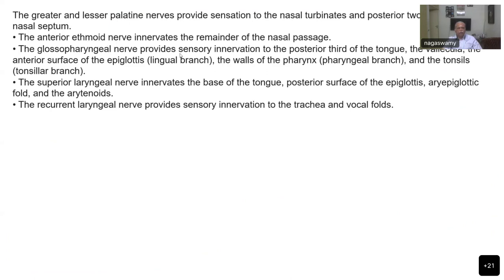The glossopharyngeal nerve provides sensation to the posterior third of the tongue, vallecula, anterior surface of the epiglottis, and walls of the pharynx and tonsillar areas. The superior laryngeal nerve innervates the base of the tongue, posterior surface of the epiglottis, aryepiglottic folds, and the arytenoid. The recurrent laryngeal provides sensation to the trachea and vocal folds — below the vocal cords.